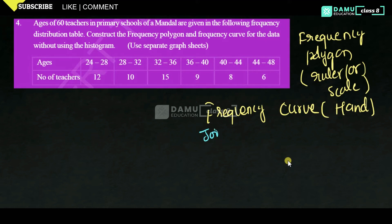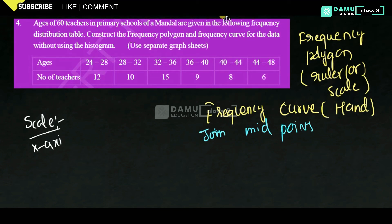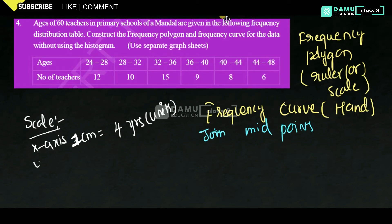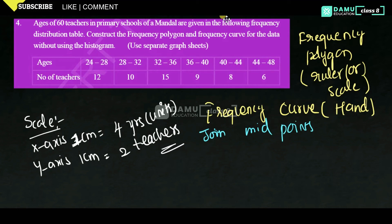Let's set up the scale. On the x-axis, one centimeter will be equal to two units (two teachers). Now let's find out the mid values for each frequency class.